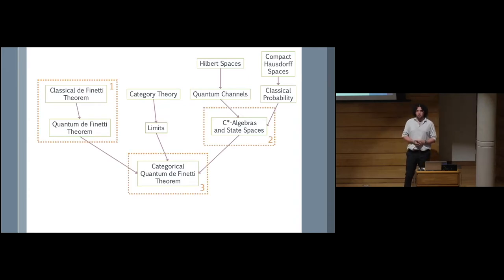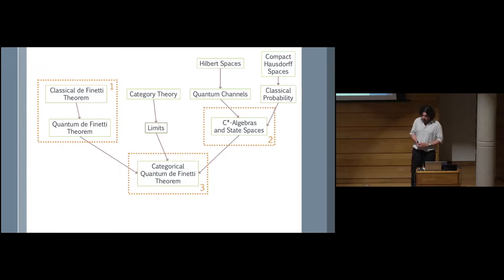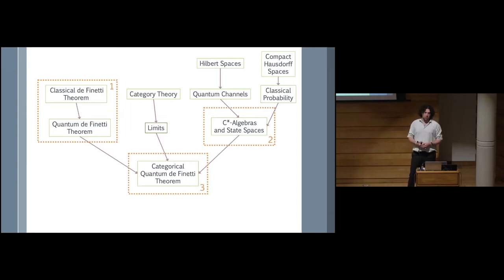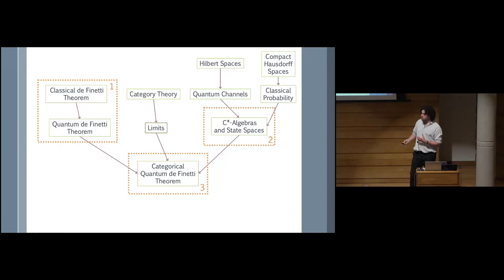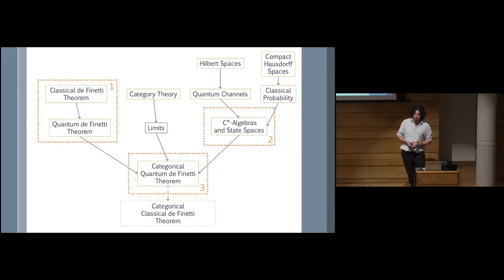First off, we're going to have a little chat about de Finetti theorems and what they mean. These are theorems that discuss exchangeable processes, so we'll talk about what exchangeability means, the kind of constraint that is, and what ends up happening when we talk about exchangeable processes. We're going to realize that in order to describe the Quantum de Finetti Theorem meaningfully in a categorical context, we're going to need a slightly different set of tools — namely C*-algebras — because they bring together classical probability and quantum randomness. Then once we've built all that up, we'll package it together and see what we can get out at the other end, including a categorical version of the classical de Finetti Theorem.